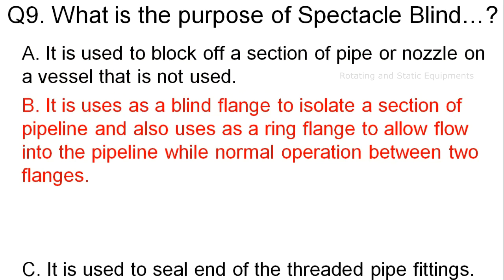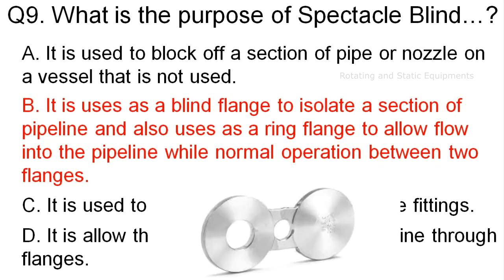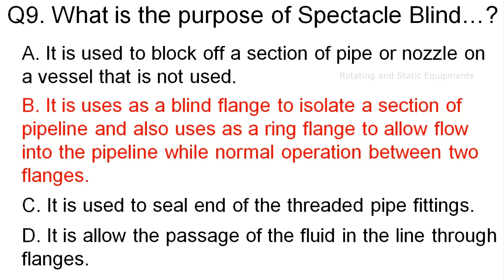Question 9: the correct answer is Option B. The purpose of a spectacle blind is that it is used as a blind flange to isolate a section of pipeline, and also used as a ring flange to allow flow into the pipeline during normal operation between two flanges. A spectacle blind is a forged product and a combination of a flange spade and ring spacer in one single unit. One end allows fluid flow through the pipe during operation, and the other end is solid to block flow during isolation or maintenance. One can simply rotate the spectacle blind 180 degrees to close or open fluid flow through the piping system.